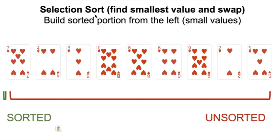We're going to start with the first element in the unsorted portion of the array — I'm denoting the unsorted portion with this red bracket. We'll walk through and find the smallest element in the unsorted portion, and once we find it we will swap it with the first element in the unsorted portion. This will grow our sorted portion by one and shrink our unsorted portion by one each iteration.